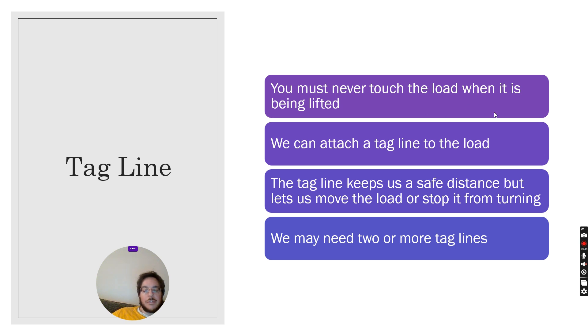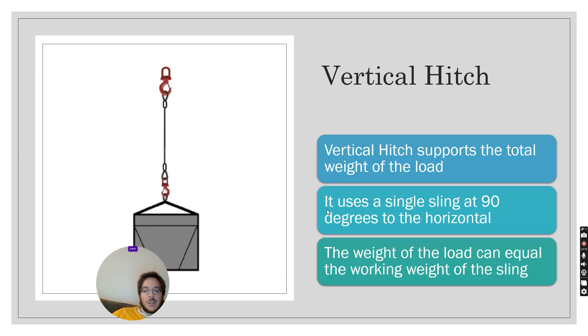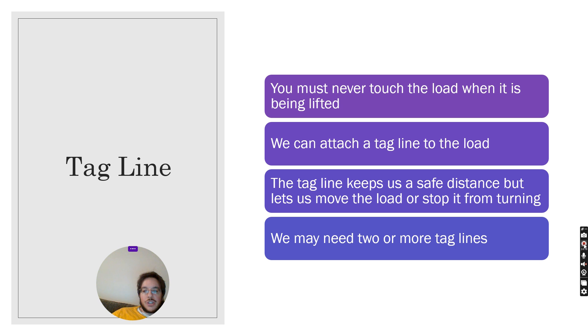Now when we're lifting we want to have what we call a tagline. We must never touch the load when it's being lifted and we must never stand under the load but if we want to move the load or stop it from turning then we attach a tagline. The tagline is like a rope and then we can be standing a safe distance from the load. Any questions please post a comment thank you.